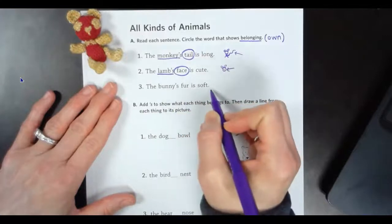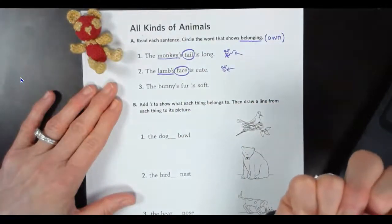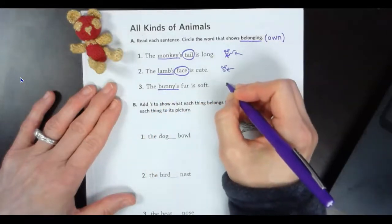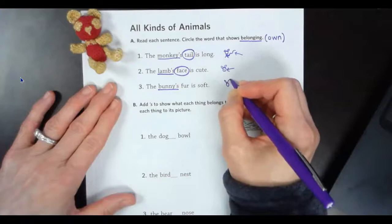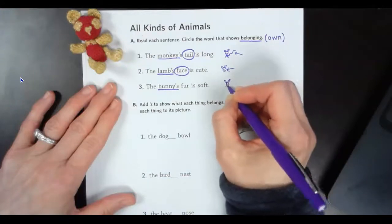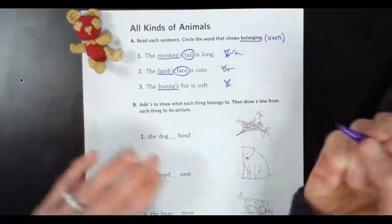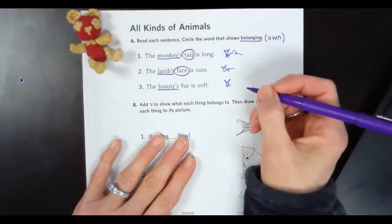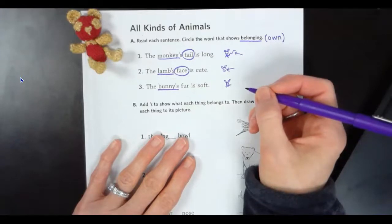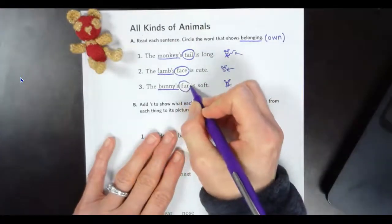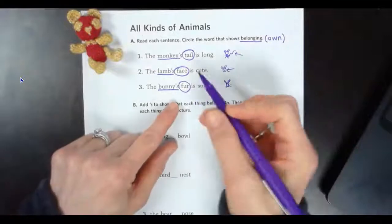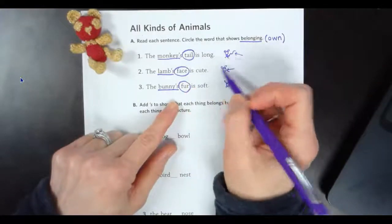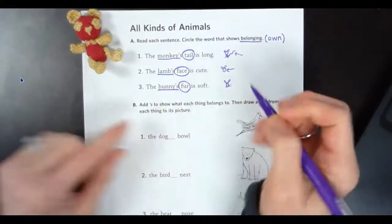All right. The bunny's fur is soft. All right. What's our animal? Yes, it's a bunny. All right. I'm going to draw a bunny. It's going to look just like the lamb, just with longer ears and whiskers. All right. The bunny's fur is soft. So what belongs to this bunny? Yeah. Yep. Its fur. In this sentence, it's fur. It could have been its ears. It could have said a lot of things. So notice that the monkey has its own tail. The lamb has its own face. The bunny has its own fur.